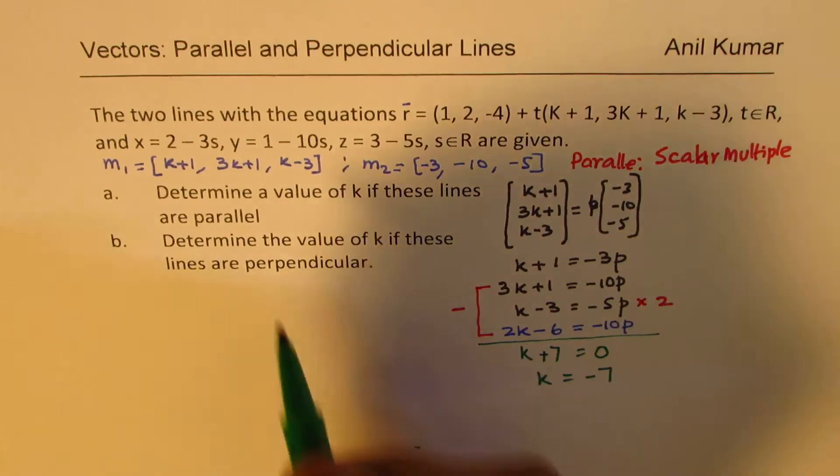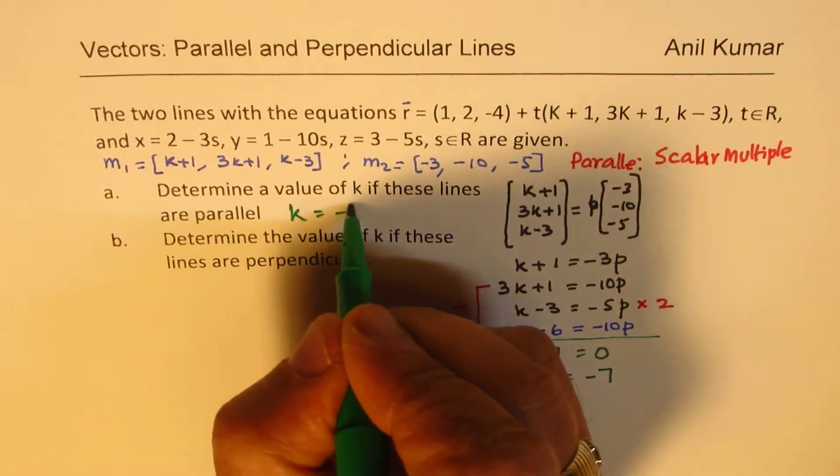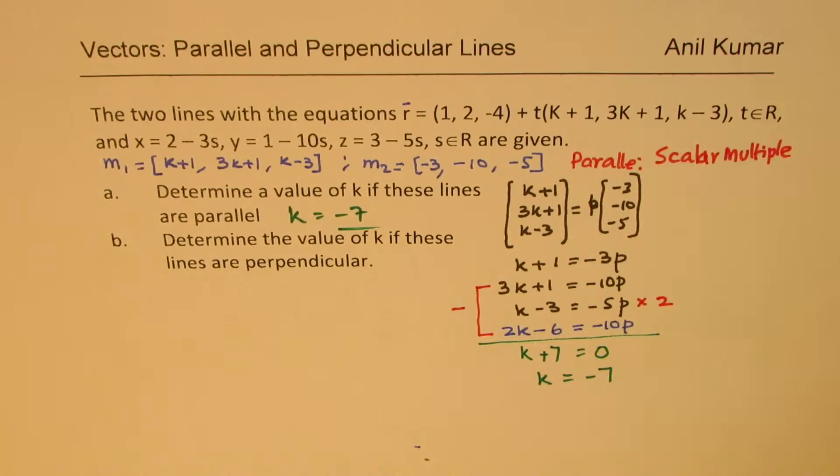So we get a value of k as -7. So that is our answer for the first case, k = -7.